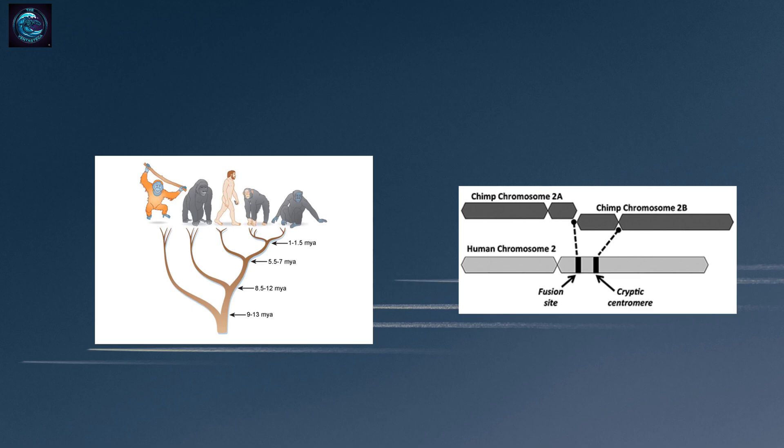This wasn't a disaster. It was just a chromosomal rearrangement. The individual who inherited this fusion could still reproduce normally, and over time, this fusion became fixed in the human lineage. The result—what was once two separate chromosomes in our ape ancestors—became the single, large chromosome 2 that every human has today.